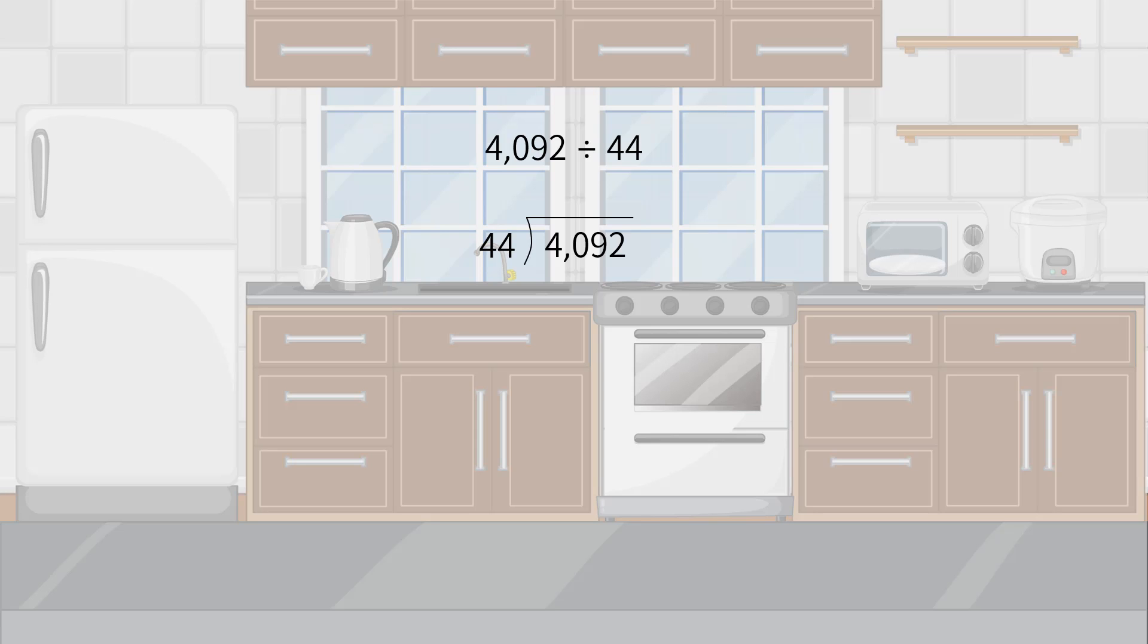We first estimate the partial quotients since 40 is smaller than 44. We add one more digit, 9, and estimate the first partial quotient.